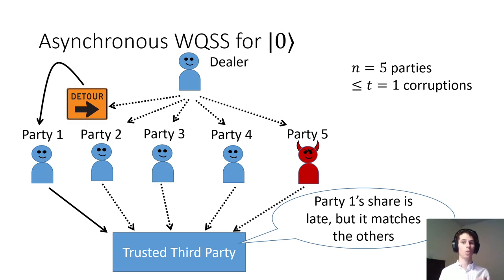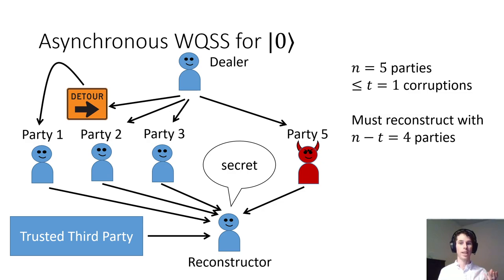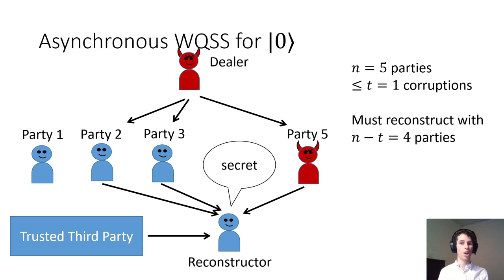Our insight is to build a late checking mechanism into the protocol which allows parties outside of the core set to contribute. This is in contrast to current classical asynchronous protocol techniques, where only the parties in the core set contribute. In the picture, the dotted lines denote old messages — everyone except party 1 has moved on, but party 1 still gets to check their share. To allow this, we show how to implement an expanded trusted third-party functionality which allows it to interact with just a single party. If the dealer is honest, then eventually party 1 will get a correct share. After it checks the share with the trusted third party, it can send it to the reconstructor, meaning every honest party will eventually send a share to the reconstructor. Because there are n-t honest parties, the reconstructor can wait until it receives n-t shares. Recall that previously it had to proceed after receiving only n-2t shares.